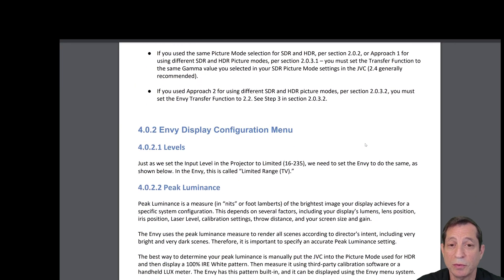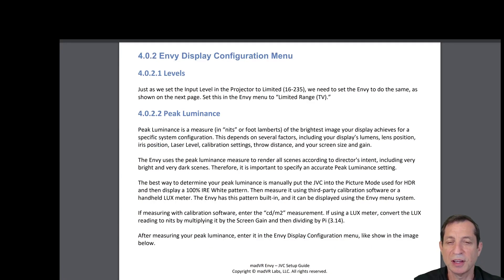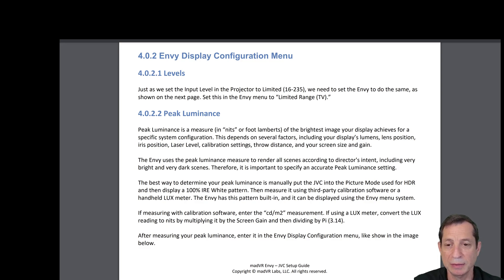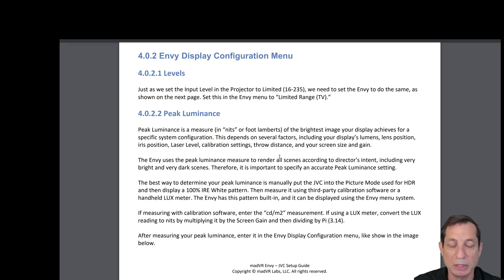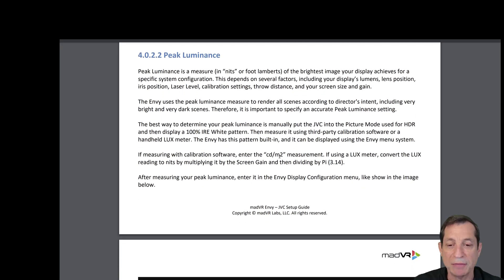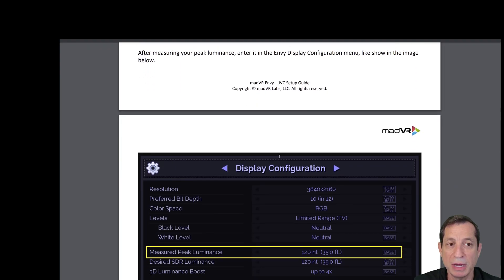If you use Approach 2 for using different SDR and HDR picture modes, you must set the Envy transfer function specifically to 2.2. Now let's discuss the Envy display configuration menu settings. For the levels, just as we set the input level in the projector to limited, we need to set the Envy to do the same — set this in the Envy menu to the setting called Limited Range TV. Next is the peak luminance. Peak luminance is a measure in nits or foot lamberts of the brightest image your display achieves for a specific configuration. The Envy uses the peak luminance measure to render all scenes according to the director's intent, including very bright and very dark scenes. Therefore, it's important to specify an accurate peak luminance setting. We discussed in a previous lesson how to measure your peak luminance — please see that lesson for more information. After you measure your peak luminance, enter it in the Envy display configuration menu as shown here.